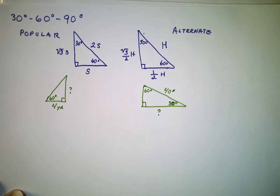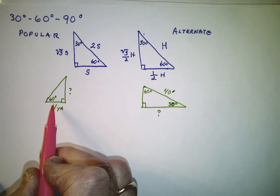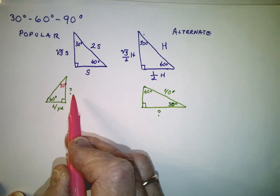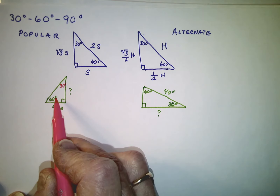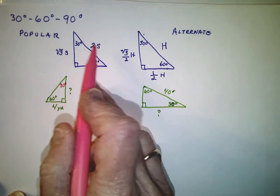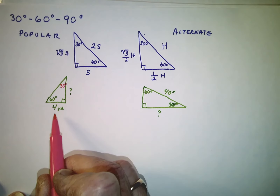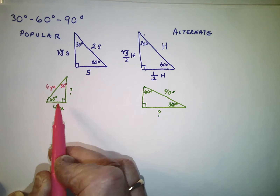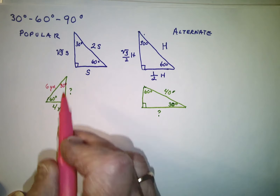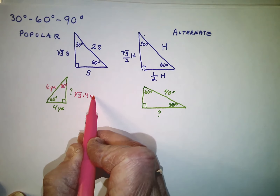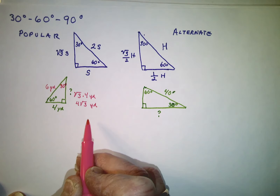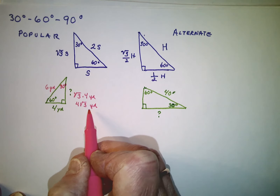Which formula works best depends on the situation. In this problem, we're given a base of 4 yards with a 60-degree angle, making the other angle 30 degrees, and we need to find the side opposite the 60-degree angle. Since we know the short side is 4 yards, the hypotenuse is 8 yards, and the side across from the 60-degree angle is the square root of 3 times 4 yards, or 4 times the square root of 3 yards — the most exact answer.